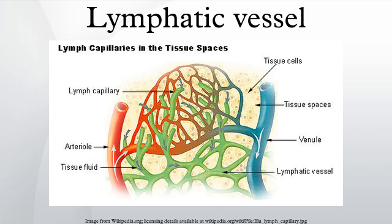The outermost layer is the adventitia, which consists of fibrous tissue. The general structure described here is seen only in larger lymphatics. Smaller lymphatics have fewer layers. The smallest vessels lack both the muscular layer and the outer adventitia. As they proceed forward and are joined by other capillaries, they grow larger and first take on an adventitia, and then smooth muscles.